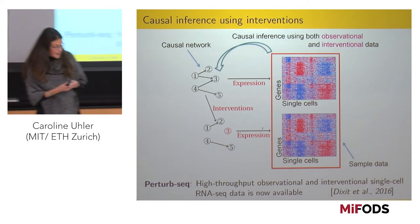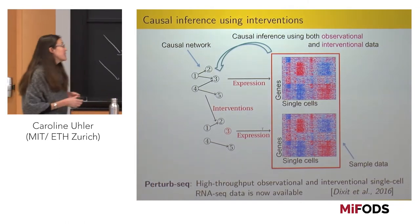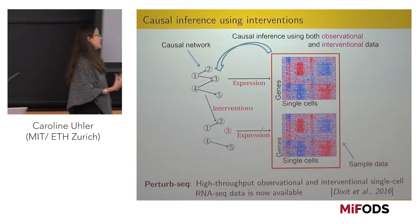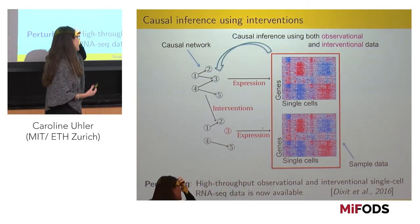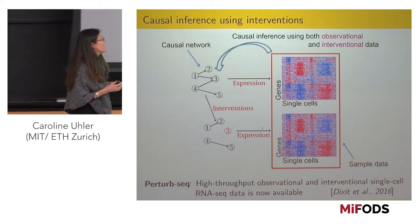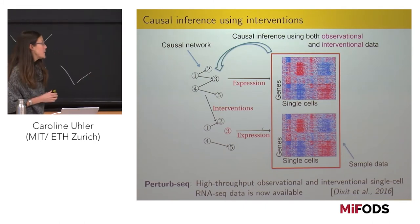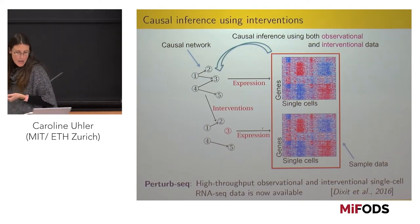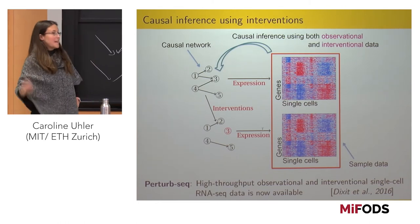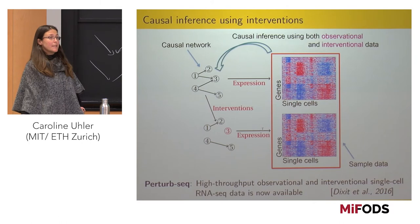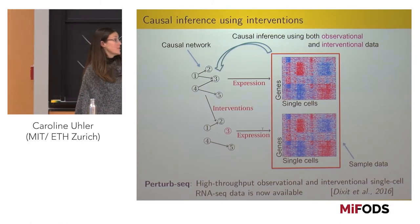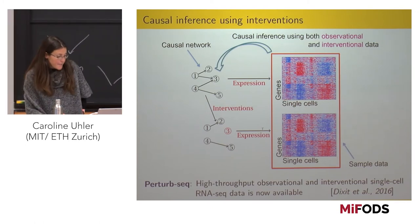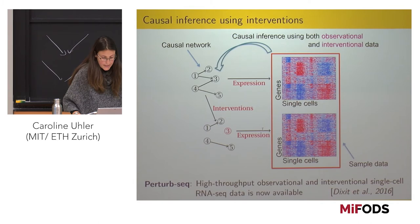Nowadays you can go and knock out any one of the genes you like. But there are many other applications — online education, advertisements — you actually get a lot of interventional data. In all these settings, you would like to use observational and interventional data together to say something about the underlying causal structures.